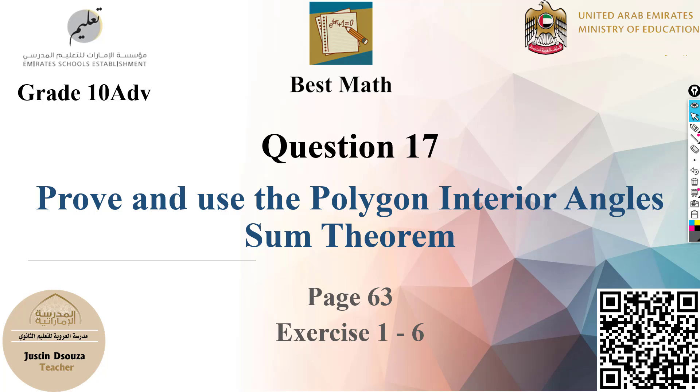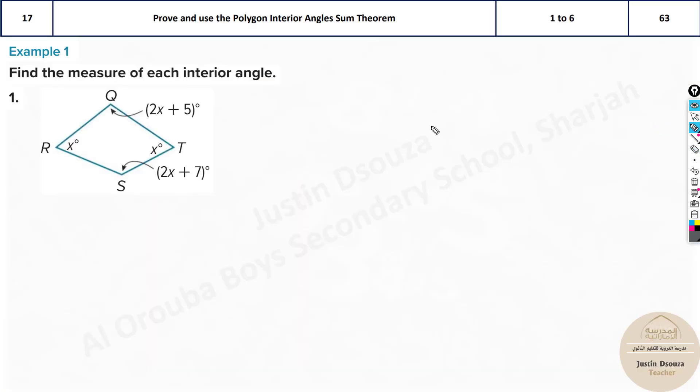Question number 17 is about interior angles of polygons. Here we are to prove and use the polygon interior angle sum theorem. This is a simple formula: n minus 2 times 180. This gives the sum of all the interior angles. I'll write SIA for sum of interior angles. This is the formula.